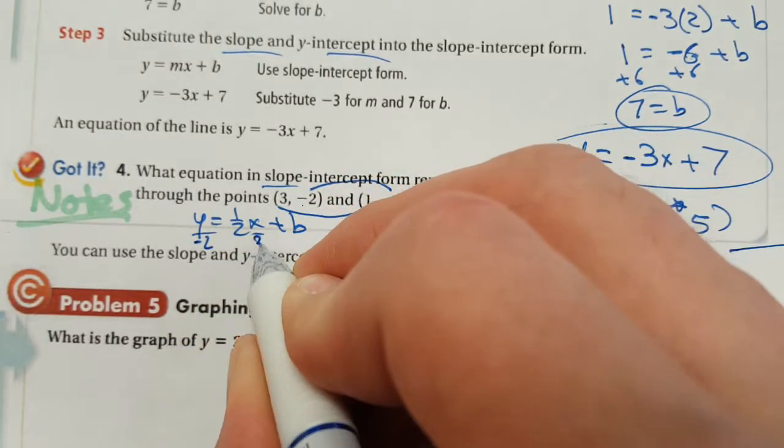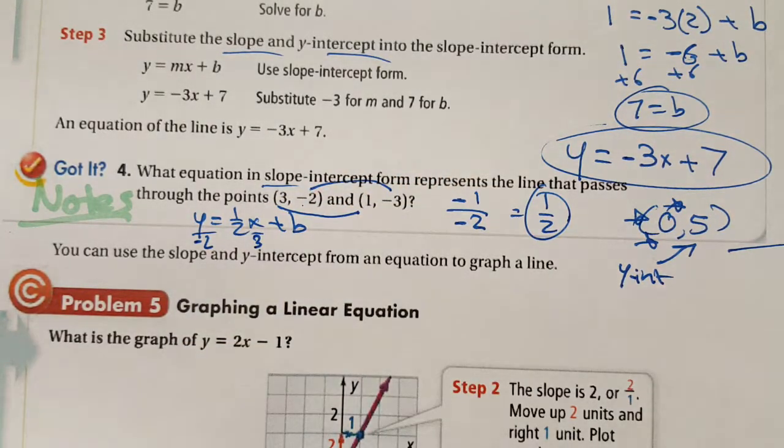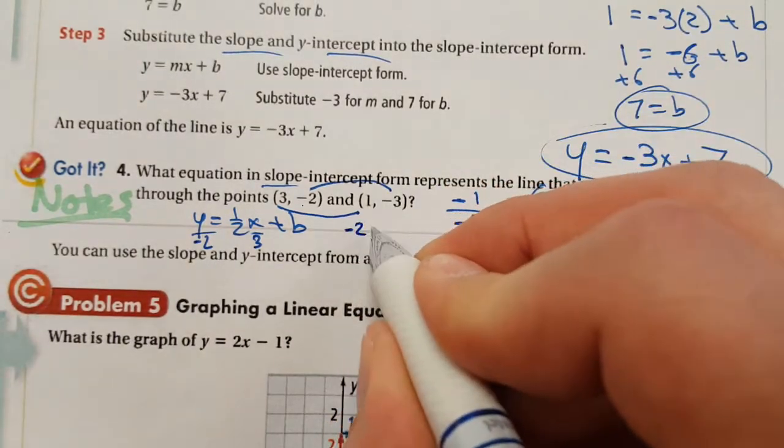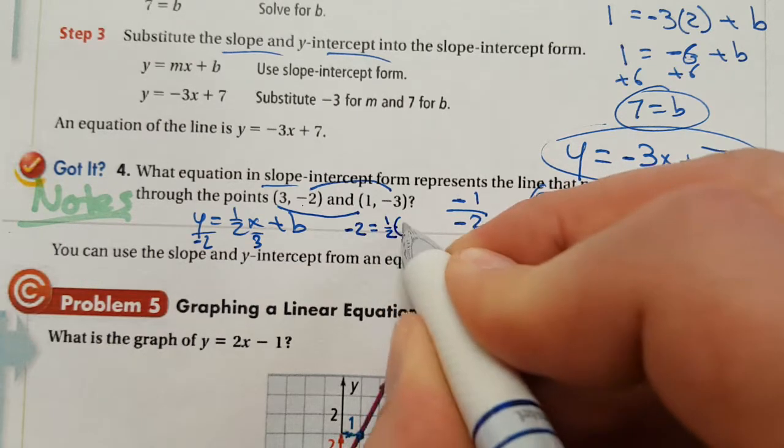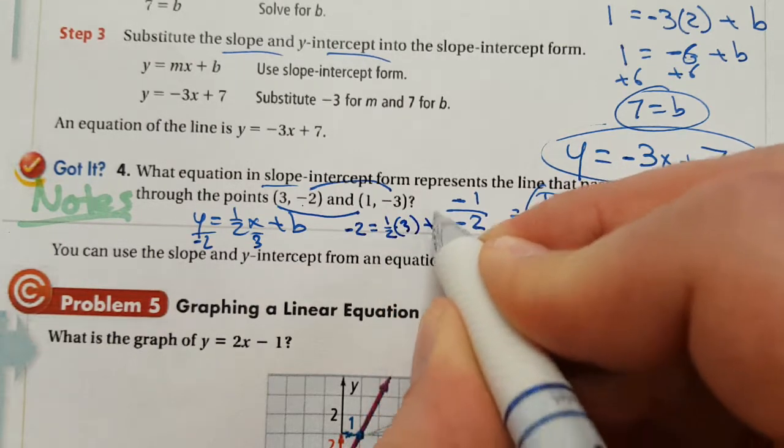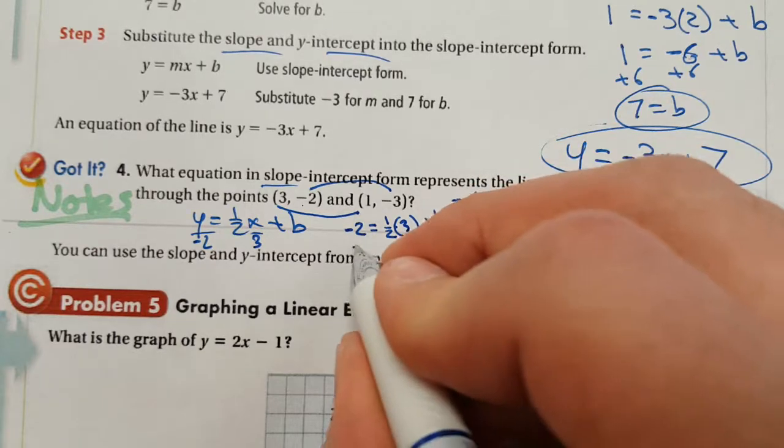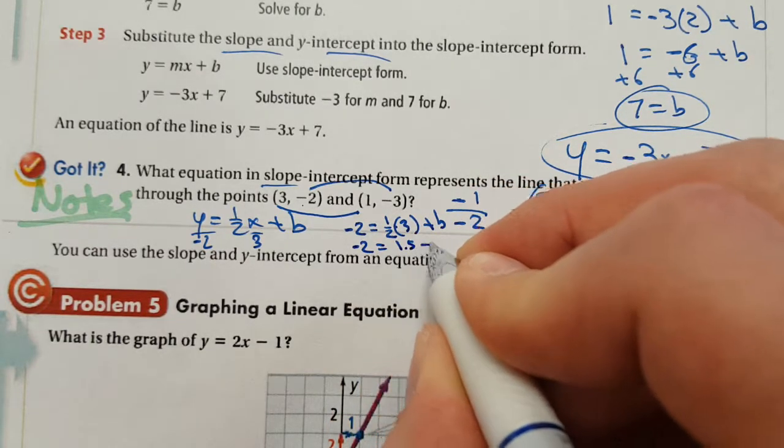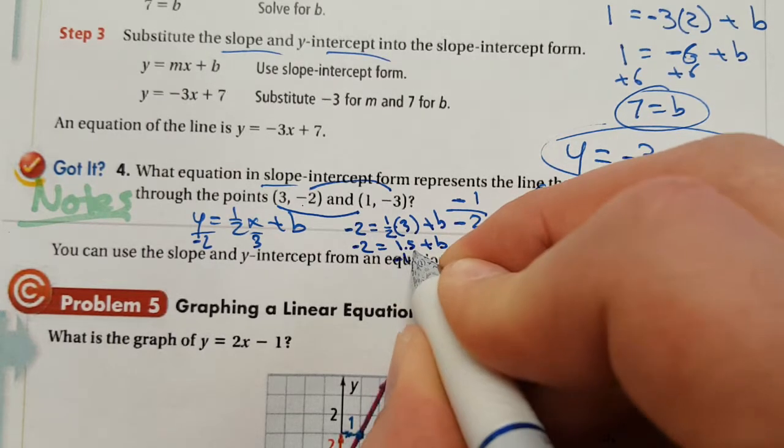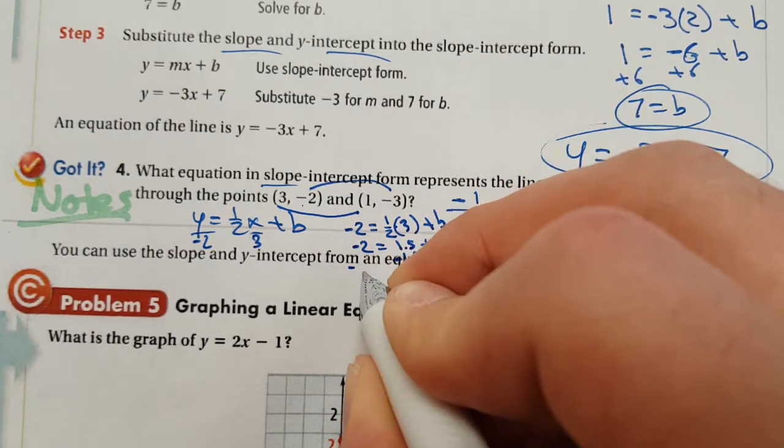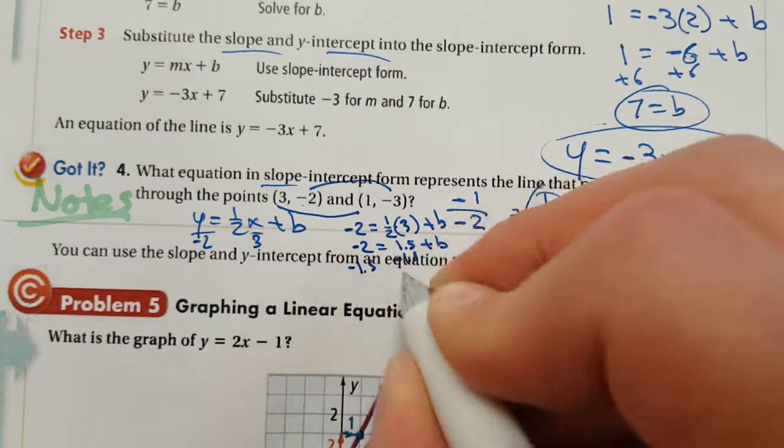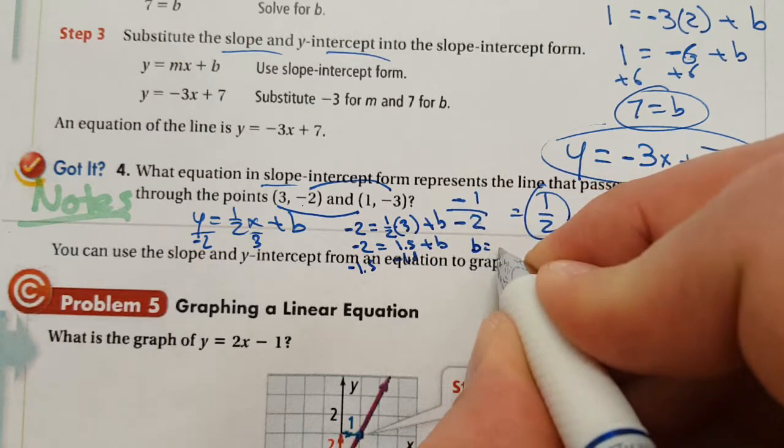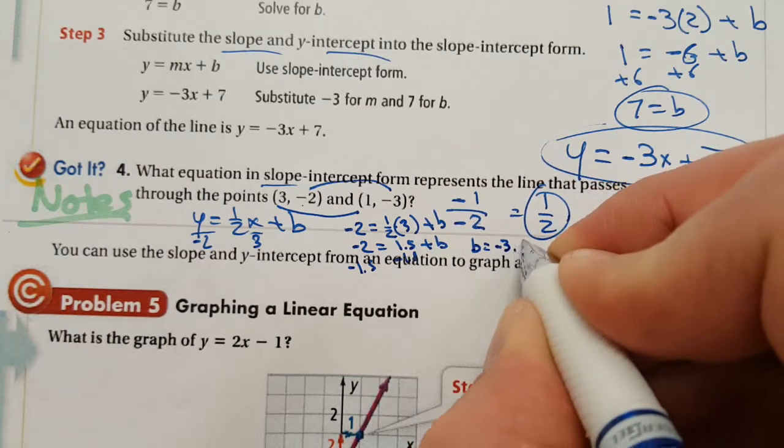I'm going to put a three in right there. Sorry, I'm kind of running out of space. You should have more room on your notes. I apologize that I don't. Negative two is going to equal one half times a three plus a B. Three times a half is one and a half. So negative two equals 1.5 plus a B. I'm going to subtract 1.5. Sorry, I'm going right into the next notes. I apologize. Minus 1.5 minus 1.5 minus 2 minus 1.5, I believe is a negative 3.5.